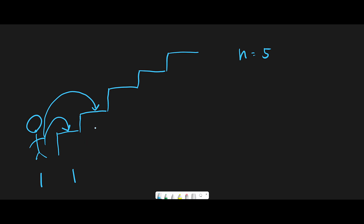Let's think about the second stair. If we make one step first, then one step again, we can reach the second stair. Or from the starting point, if we make two steps, we can reach the second stair. So we have only two ways to reach the second stair, and that's why I put 2 here.